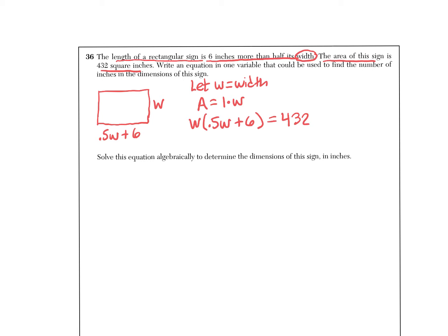It says write an equation in one variable that could be used to find the number of inches. We've done that, we have an equation, there's one variable. That's the first step; this is a four-point question so you've got your first part done.